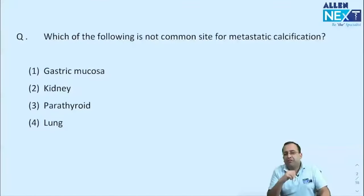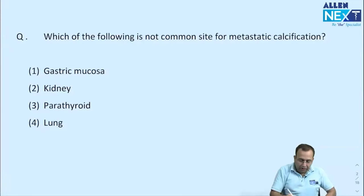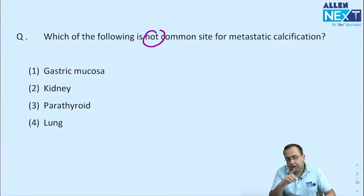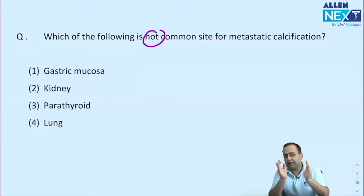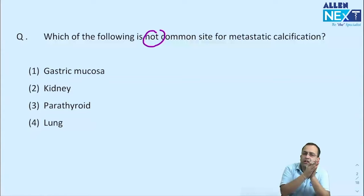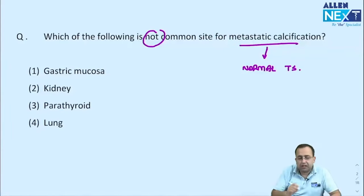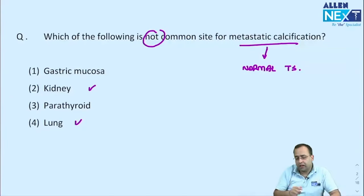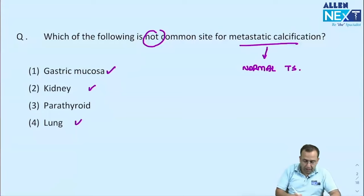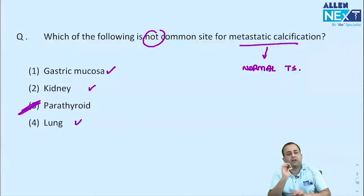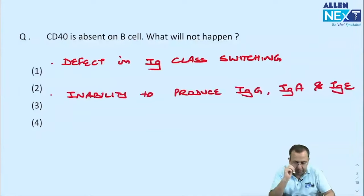First question: which is NOT a common site for metastatic calcification? Calcification is of two types — dystrophic (dead/damaged tissue) and metastatic (normal tissue). The most common site of metastatic calcification is the lungs. Other sites include kidney (renal tubules), stomach (gastric mucosa). The site that is NOT common is parathyroid.